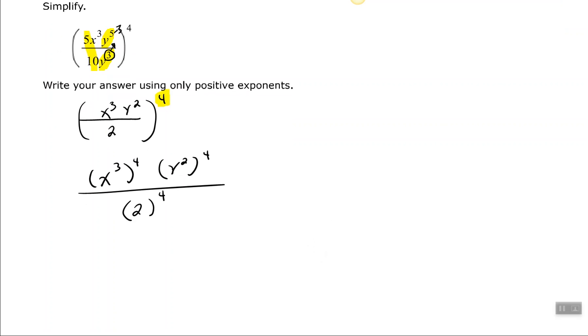So now in my numerator, I need to use my power to the power rule. So remember the power to the power rule says that you multiply the exponents. When you have a base with an exponent raised to another exponent, you multiply the exponents. So x to the 12th, y to the 8th.